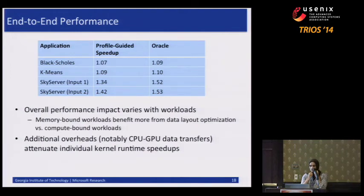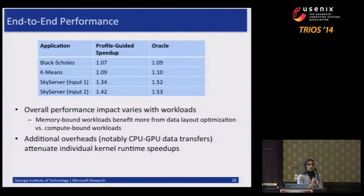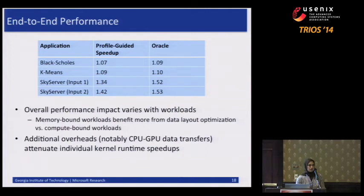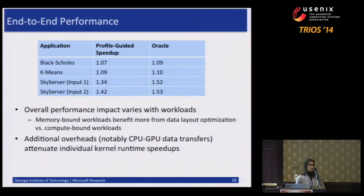Some of these numbers like 7% or 9% may not look that high, and the reason is that we're just really optimizing the kernel runtimes but showing end-to-end performance. This includes the cost of moving data from CPU to GPU, which on discrete GPUs is usually the bigger cost. We believe that on integrated GPUs where those overheads are much lower, we would see a much higher benefit.